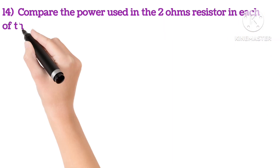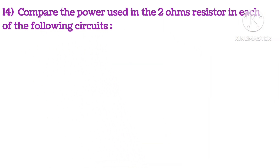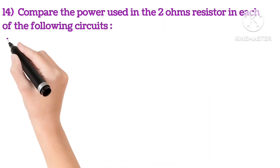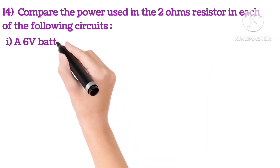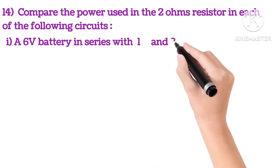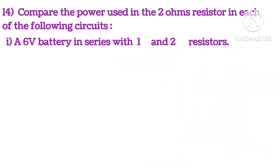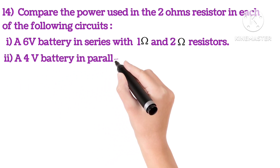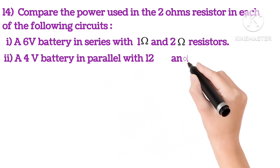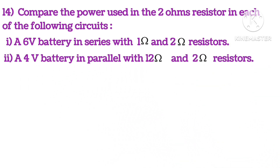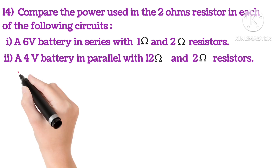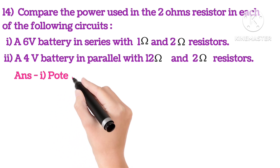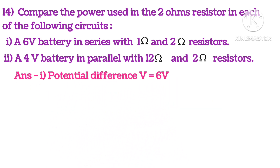Fourteenth: compare the power used in 2 ohms resistors in each of the following circuits. A 6V battery in series with 1 and 2 ohms resistors, and the second is a 4V battery in parallel with 12 and 2 ohms resistors. So in the first case, the potential difference is 6V.